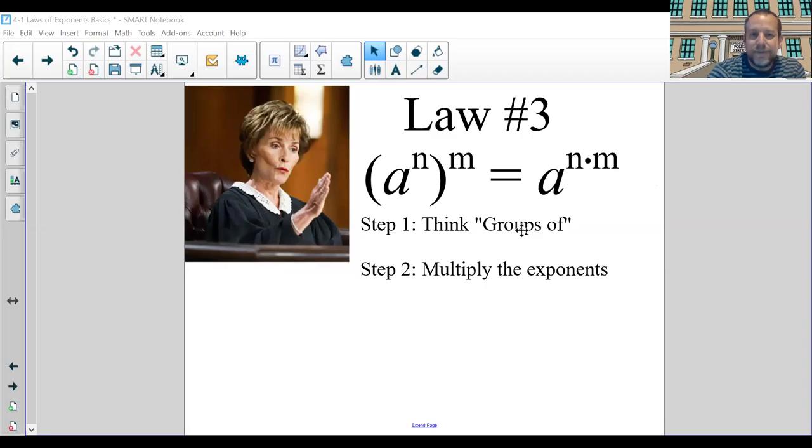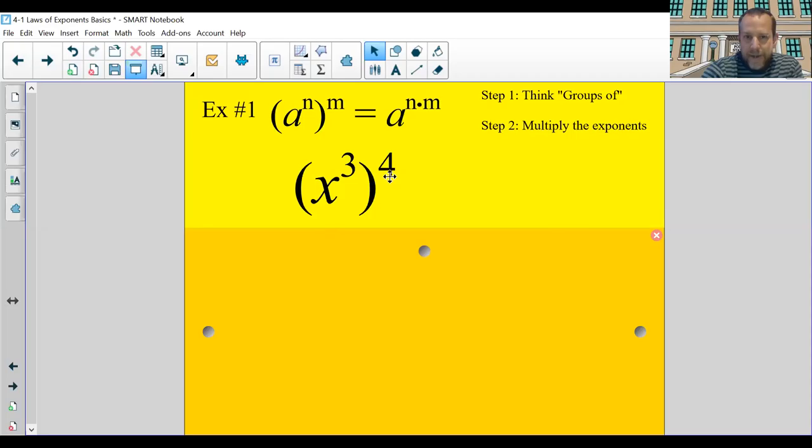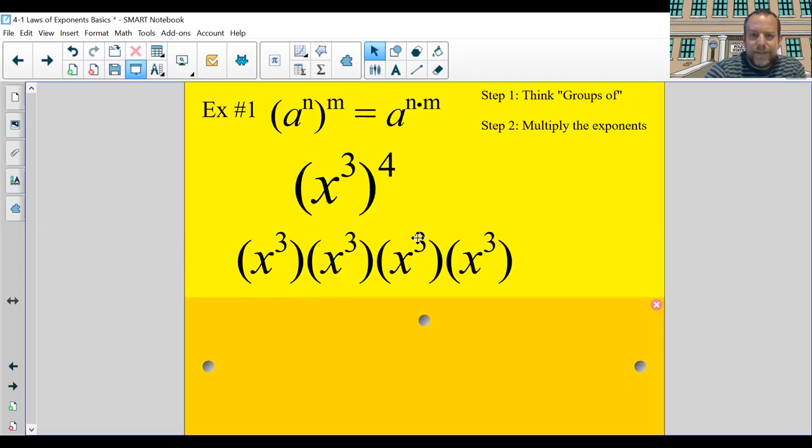Let's see again why that works, and you'll see why it's important to know the why in a second. All right, so if you had this, the way you think about parentheses is a group. So this is a group of three x's, and this is going to be that group of three x's multiplied by itself four times. And so if you actually wrote that out, it would look like that: x to the third times x to the third times x to the third times x to the third.